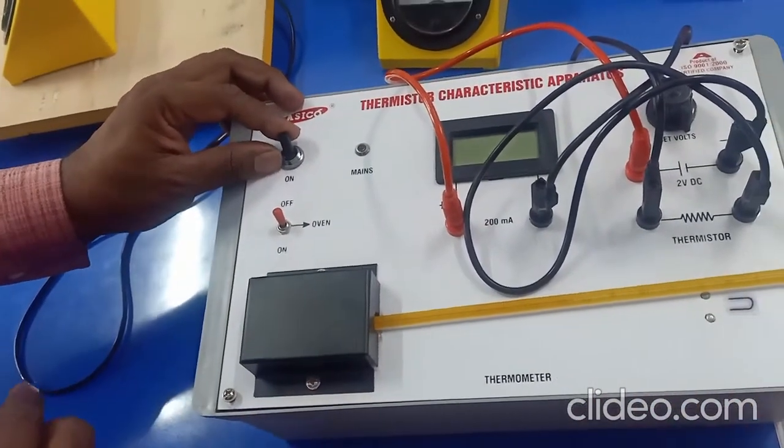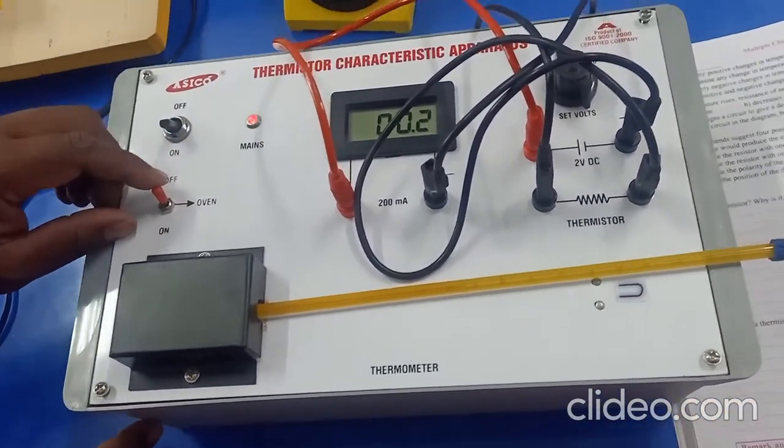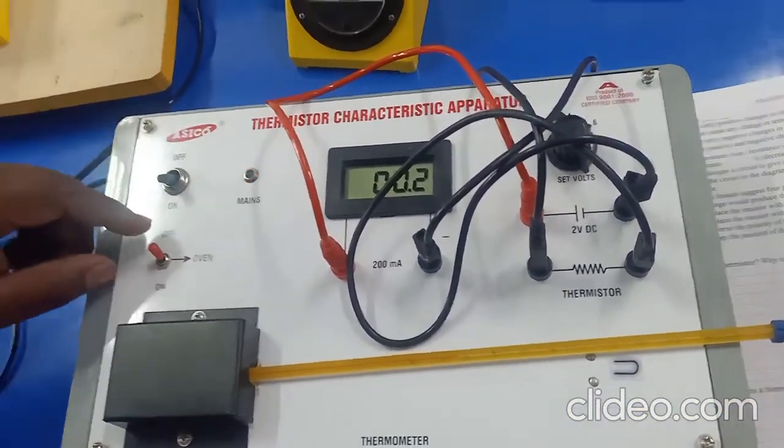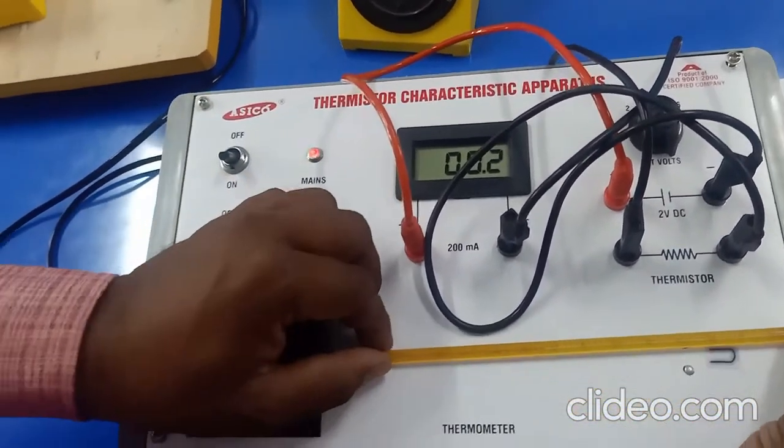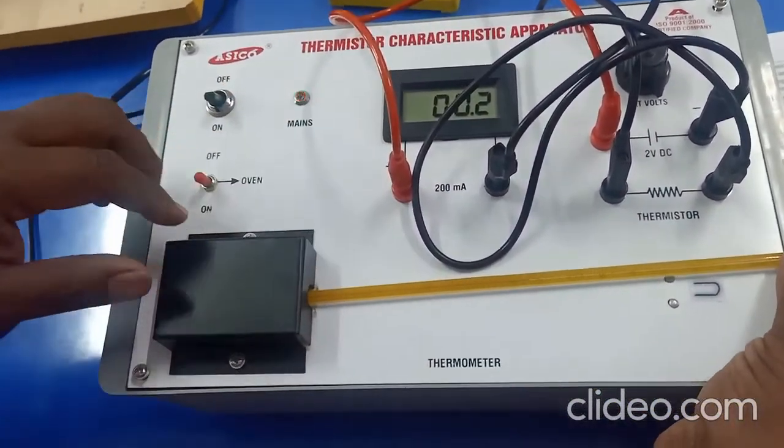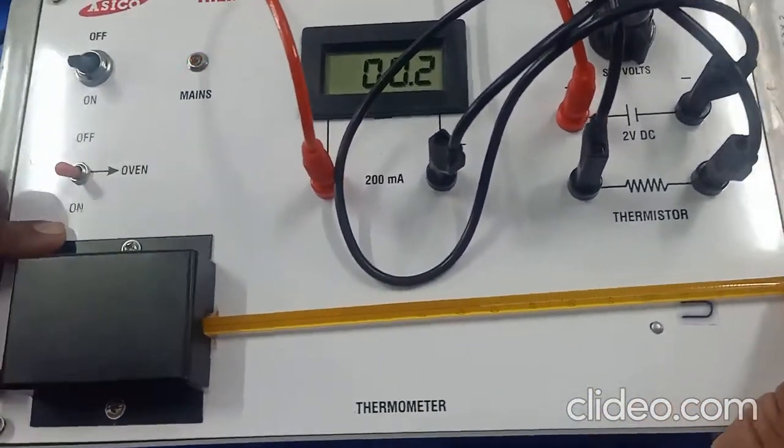We have to turn on that kit as well as we have to switch on that oven. What we have to do exactly? According to the change in temperature, we are going to note down current and V equals IR. On the basis of this formula, we are going to find out resistance of thermistor. Let's start.